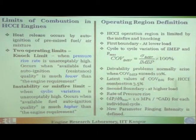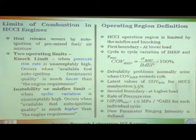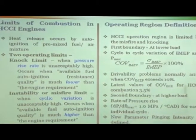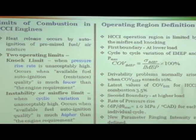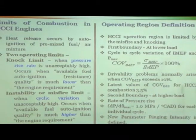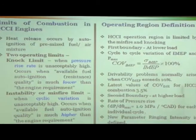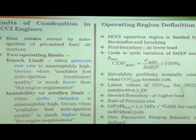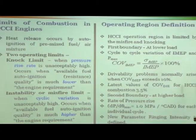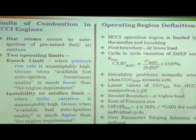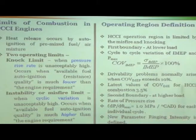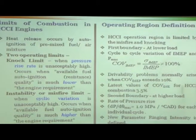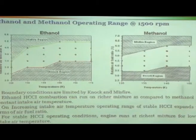The second boundary is at higher load: when you put in more fuel, the pressure rise becomes very high. The rate of pressure rise gives a limit — dP/dθ max, meaning change in pressure per crank angle degree maximum — should be limited to 10 MPa per crank angle degree, that is 10 bar. So if the rate of pressure rise is more than 10 bar per crank angle degree, that defines the second boundary at higher load for each individual cycle. A new parameter called ringing intensity is also defined.